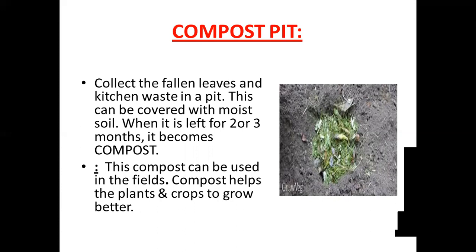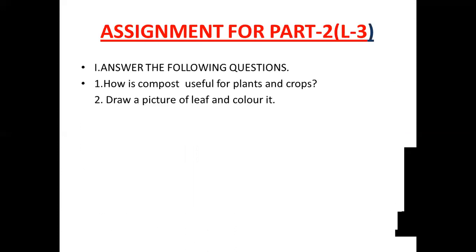It is a natural manure. For the assignment, answer the following questions: How is compost useful for plants and crops? And draw a picture of a leaf and color it. Any shape of leaf you can draw, as told in part 1, and color it. You know the color of the leaf. Observe the video carefully and answer the questions. Draw the leaf neatly and color it neatly — a somewhat visible leaf, not very small. Thank you children.